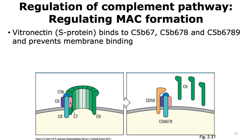Another way to disable the complement pathway is by inhibiting the formation of the membrane attack complex. A protein called vitronectin, or the S protein, is able to bind to the complement proteins that aid in the formation of the membrane attack complex. Thus, it prevents membrane binding of the C5b-6-7, C5b-6-7-8, or C5b-6-7-8-9 complexes, and the membrane attack complex cannot be formed.